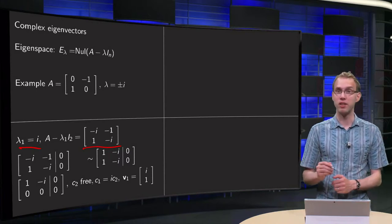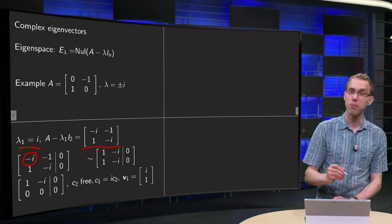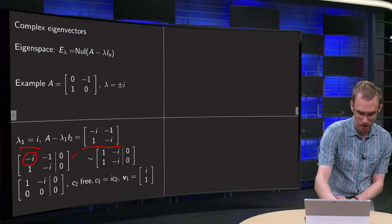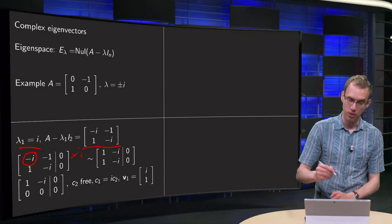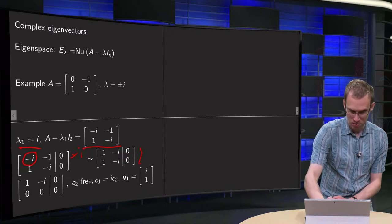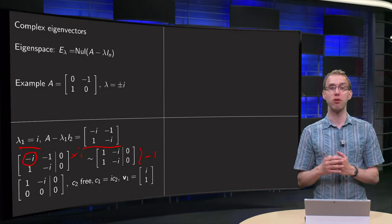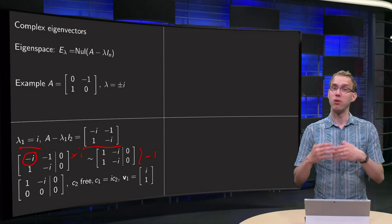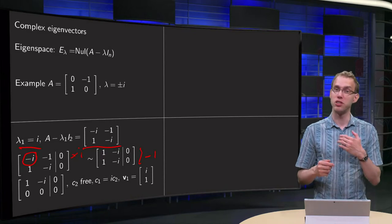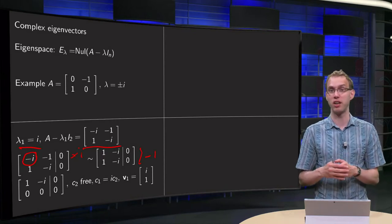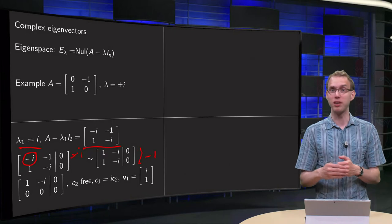We want a 1 in the pivot position. We can make a 1 there by multiplying the first row by i, and then we see that both rows are the same now, so we can get rid of the second row by subtracting the first one from it, and we have a row of zeros. Of course we should get a row of zeros, because we are looking for non-trivial solutions. If we did not have a row of zeros, we would only get the trivial solution c1=0 and c2=0, and then we wouldn't have any eigenvectors. So if we have the correct eigenvalues, we should get a row of zeros — it's always a good check.